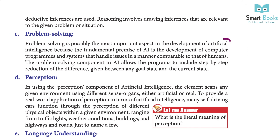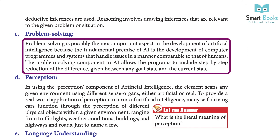C. Problem Solving: Problem solving is possibly the most important aspect in the development of artificial intelligence, because the fundamental premise of AI is the development of computer programs and systems that handle issues in a manner comparable to that of humans. The problem solving component in AI allows programs to include step-by-step reduction of the difference between any goal state and the current state.